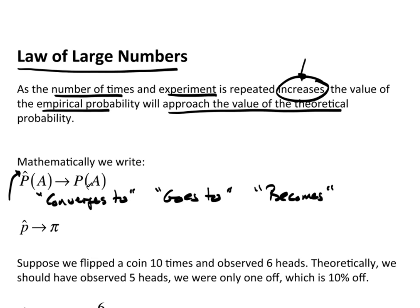Now, this notation is using probability statements. This is saying the empirical probability, P̂(A), approaches π, the true probability.